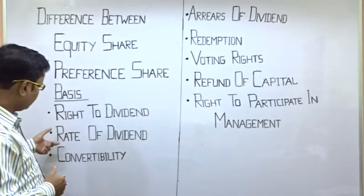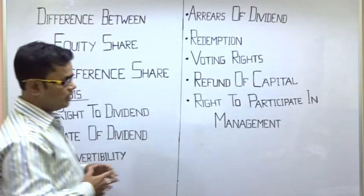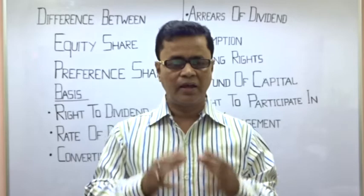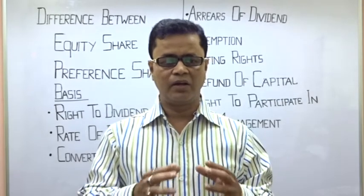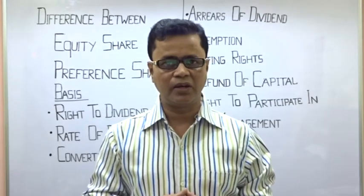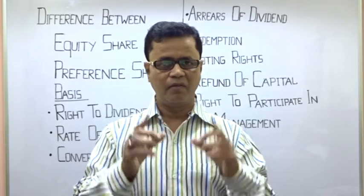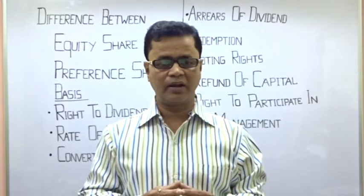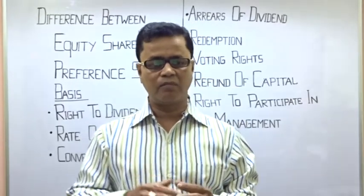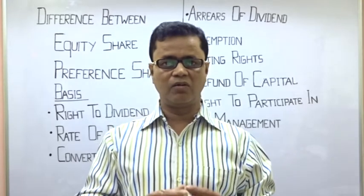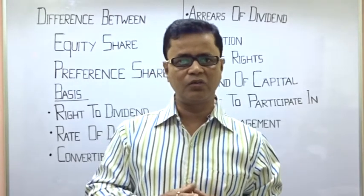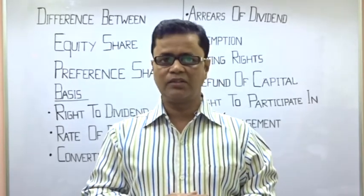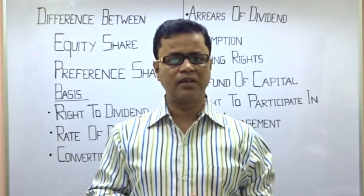Second difference: Rate of Dividend. Rate of Dividend in the case of Preference Share is fixed. Yani, Preference Share ki condition mein dividend ka rate fix hotta hai. But in the case of Equity Share, rate of dividend is decided by the Board of Directors and approved by the Shareholders. Yani, yahan dividend kabhi increase hoti hai, kabhi decrease hoti hai, aur yoh Board of Directors decide karta hai, aur Shareholders ke approval se.